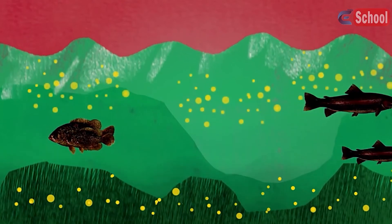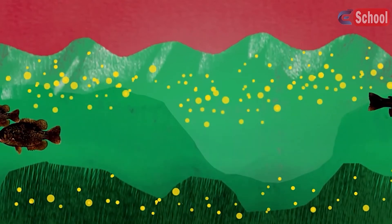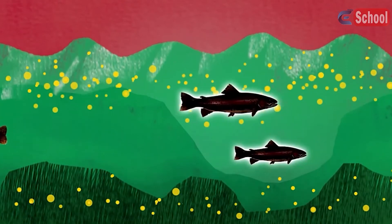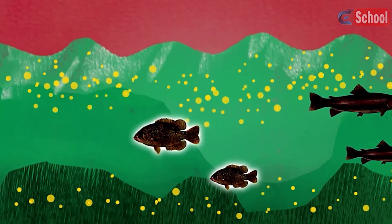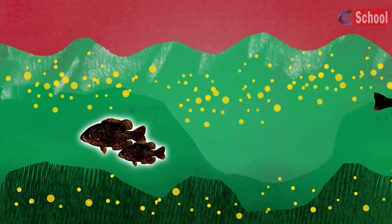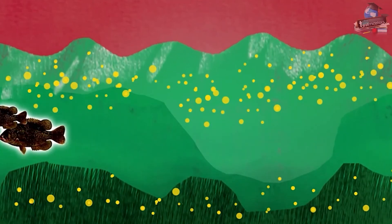For example, commercially and recreationally desirable fish such as trout are replaced by undesirable fish such as carp, because they have a higher tolerance to lower dissolved oxygen levels. This can result in no fish at all.